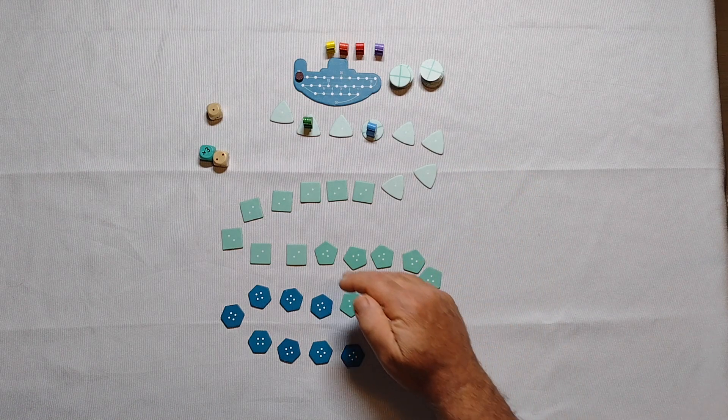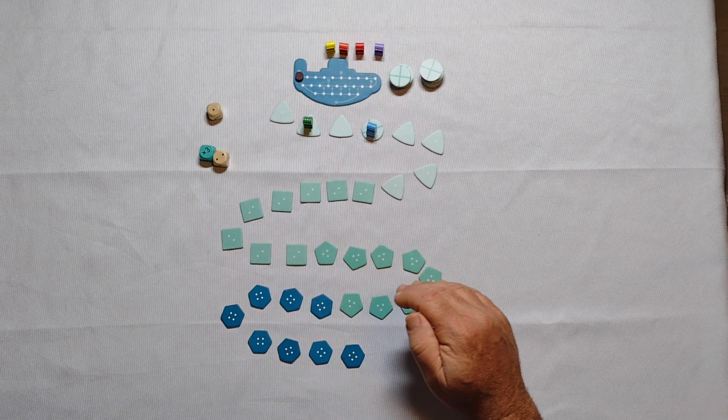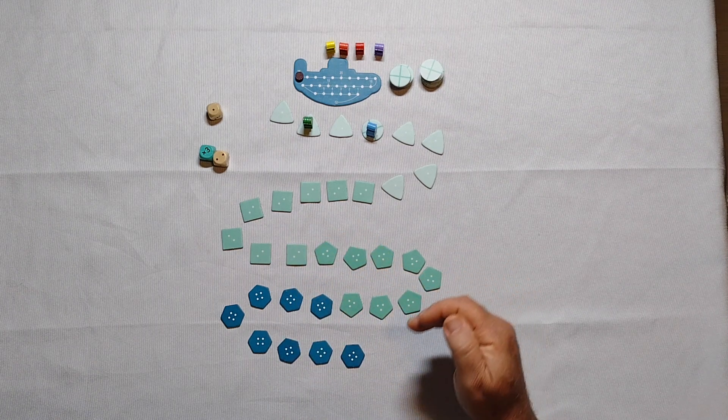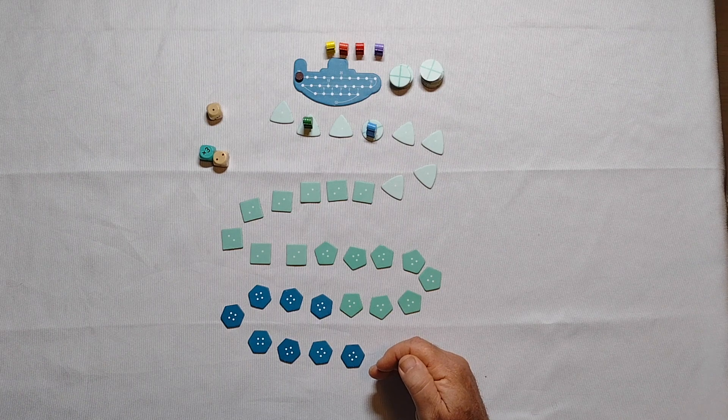One dots are worth zero to three points, two dots four to seven, three dots eight to eleven, and four dots twelve to fifteen points.